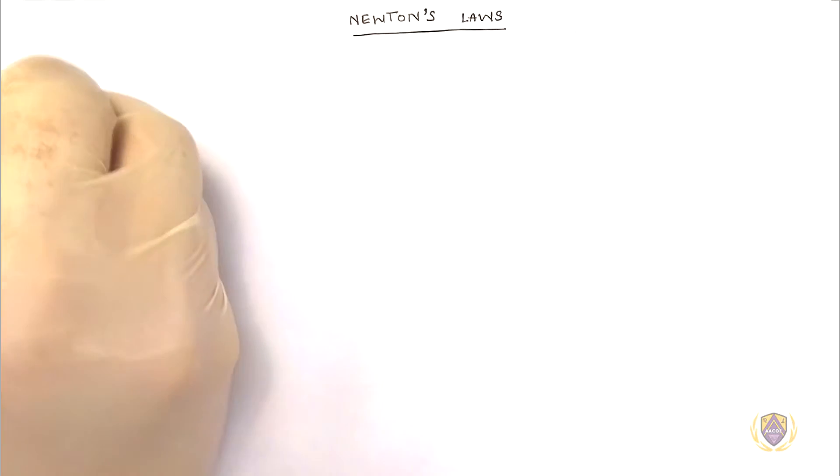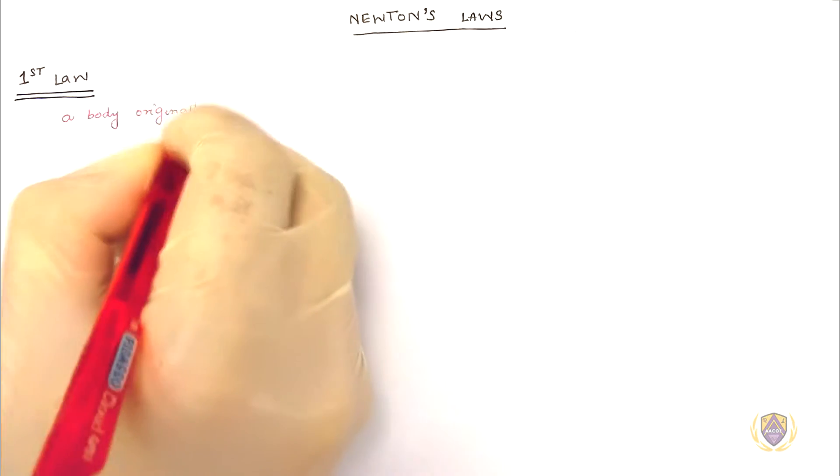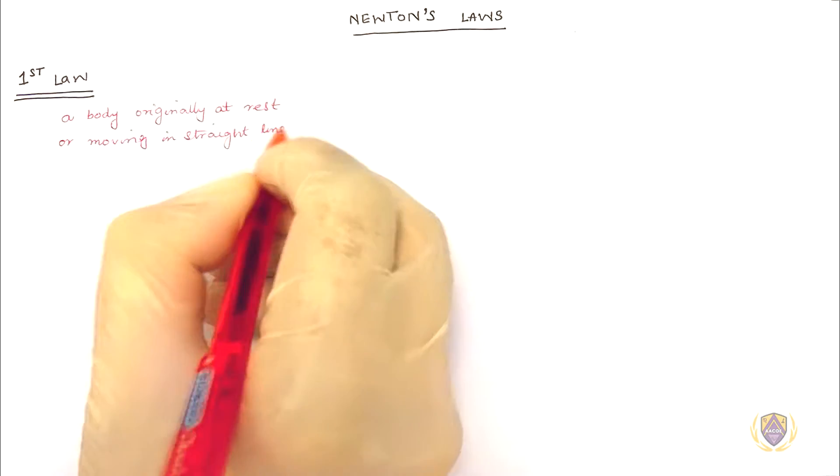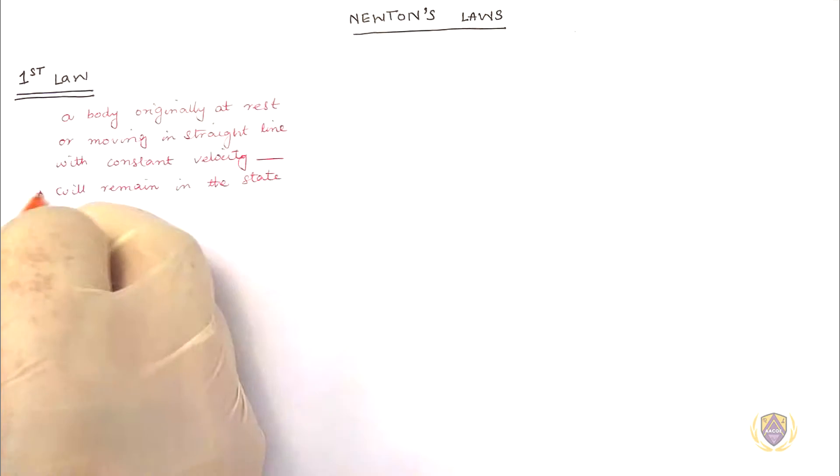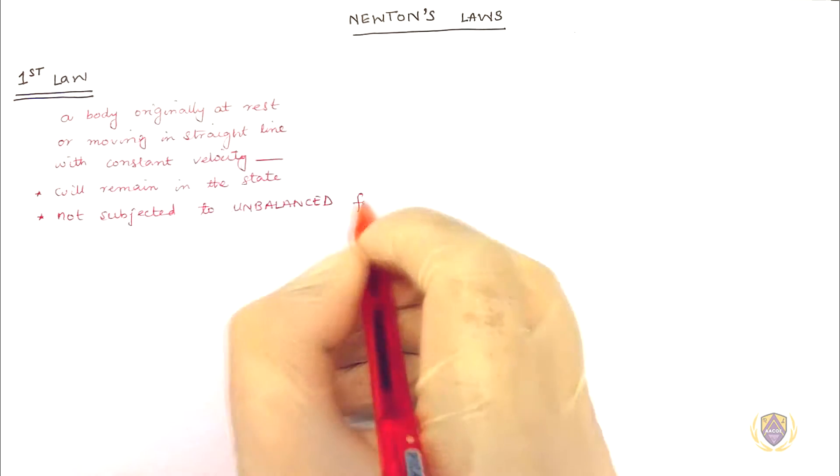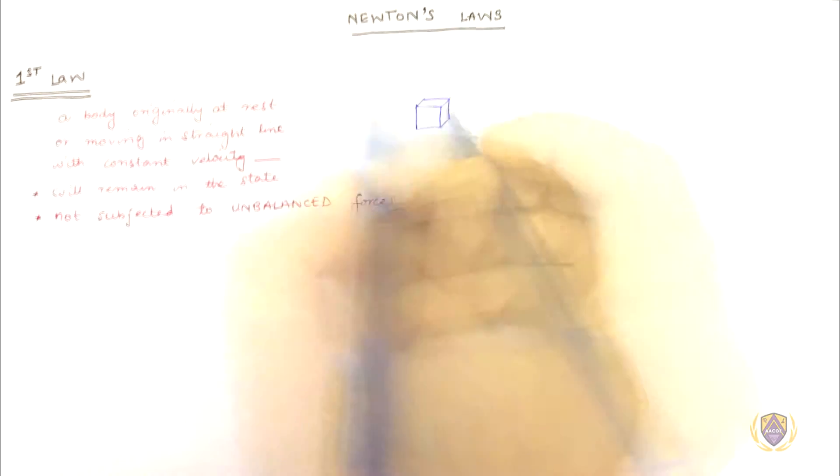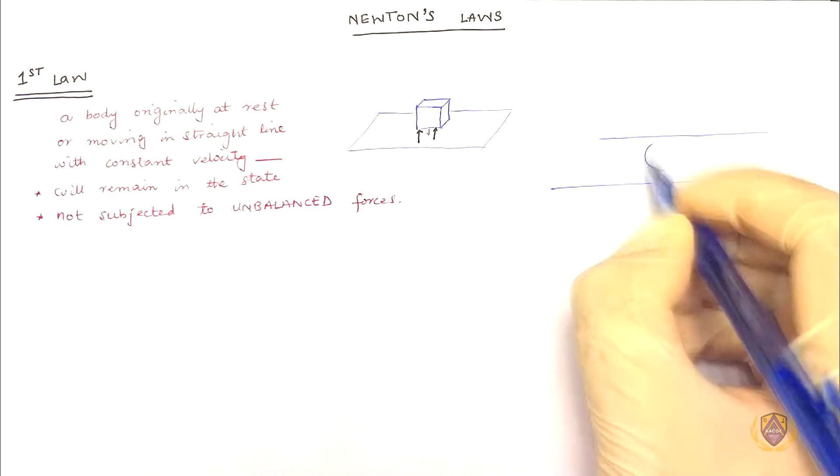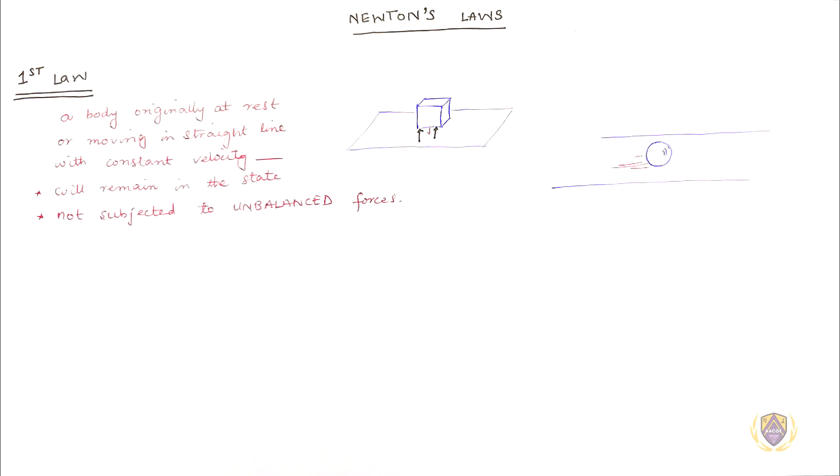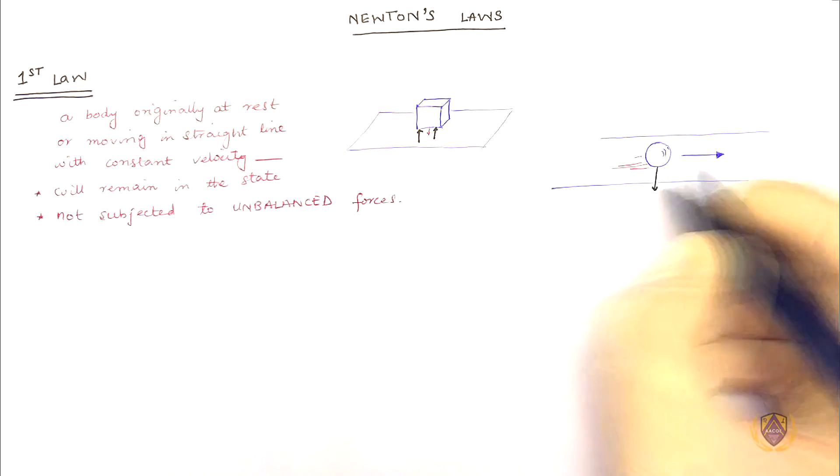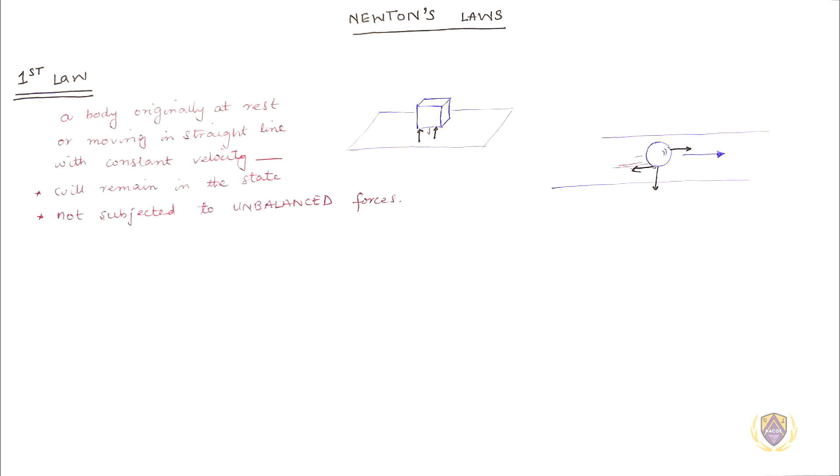Newton's Laws - First Law: A body originally at rest or moving in straight line with constant velocity will remain in the state provided it is not subject to unbalanced forces. As in a box at rest or a ball moving in straight line. Key word here is straight line which means that First Law does not cover the object moving at a constant velocity in a curved path.